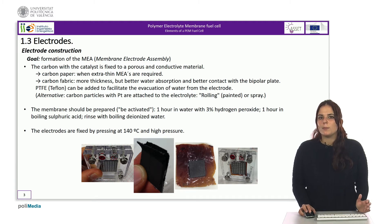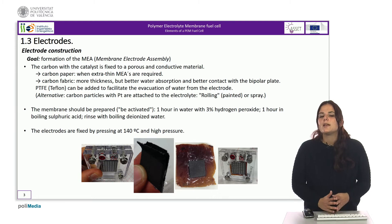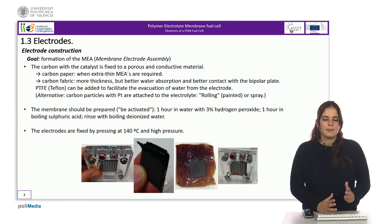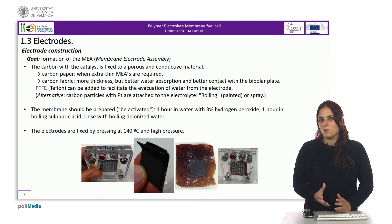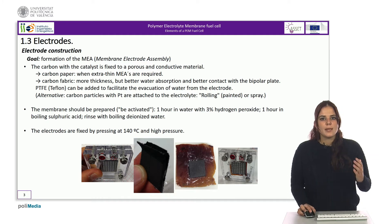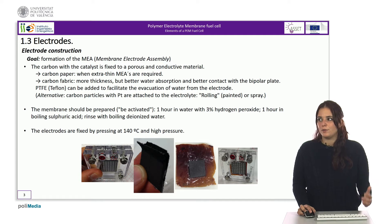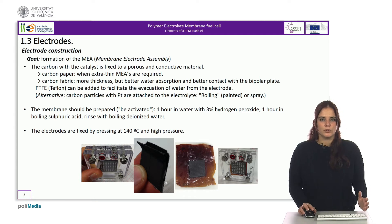Before mounting the membrane on the membrane electrode assembly, it must be activated by keeping it in water with 3% hydrogen peroxide for one hour. Then it needs to be boiled for one hour in sulfuric acid. Finally, it is cleaned in deionized water.